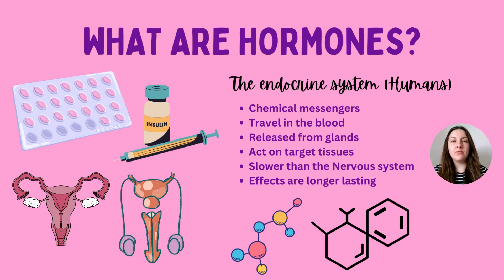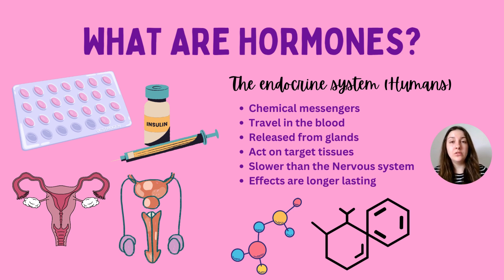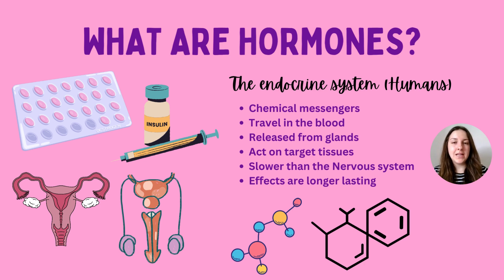Usually hormones are associated with a certain period of time, such as puberty, but hormones are released every single day in our bodies to help us coordinate and live our lives. The endocrine system is the organ system that releases hormones via glands — specific organs that secrete hormones directly into the bloodstream. These hormones travel to target tissues that have receptors, causing a response. The pituitary gland is called a master gland because it releases a hormone that acts on another gland, which then releases its own hormone.